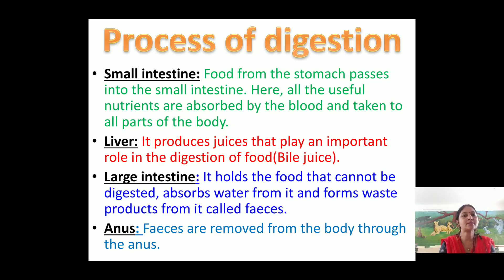After that, the food passes to the large intestine, which holds food that cannot be digested. It absorbs water from this undigested food and forms waste products called feces. This waste is then sent to the rectum, and finally the feces are removed from the body through the anus.